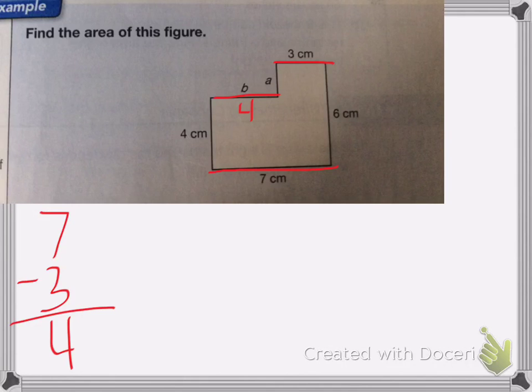Same thing with the length. So I have the full length is 6, my short length that it gives me is 4. So to figure out what a is, I need to do 6 minus 4, which will give me a, so 6 minus 4 is 2. So a is equal to 2 centimeters.